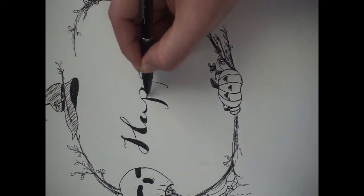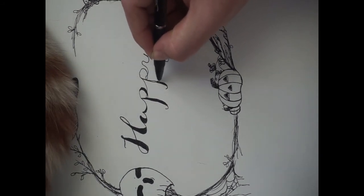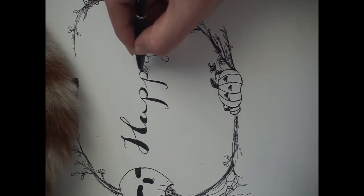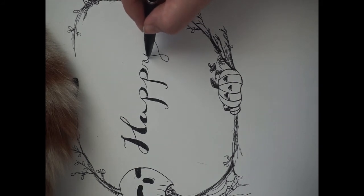And then for all of the downstrokes, I just made the lines really thick and kept the upstrokes thin. And I really liked the style. Yep, there goes his tail. I really liked the style that it had.